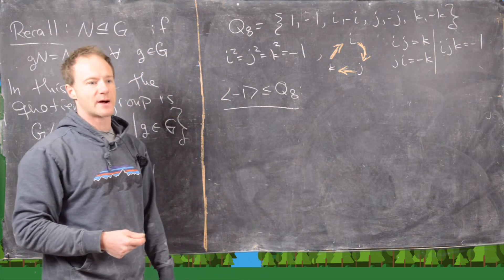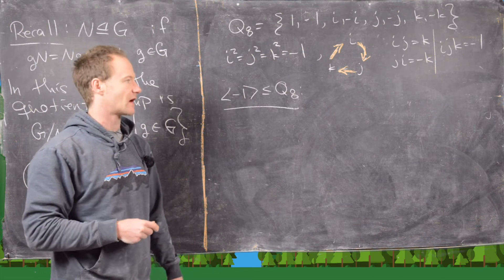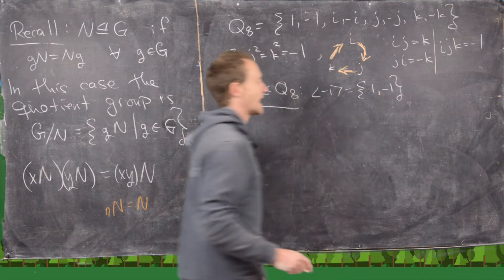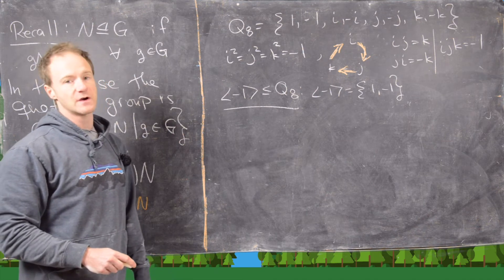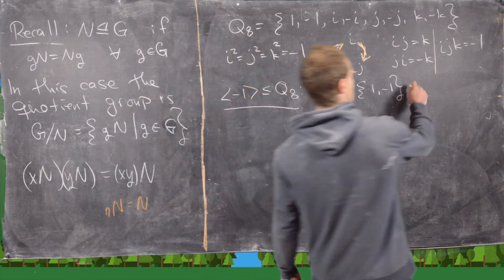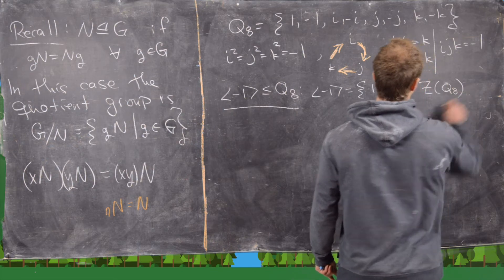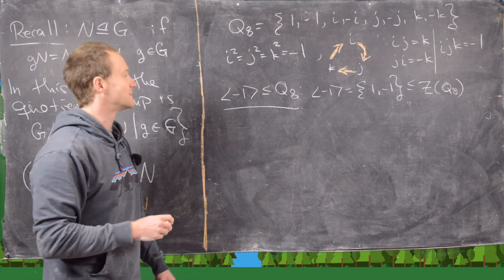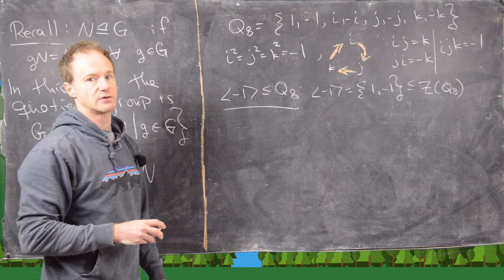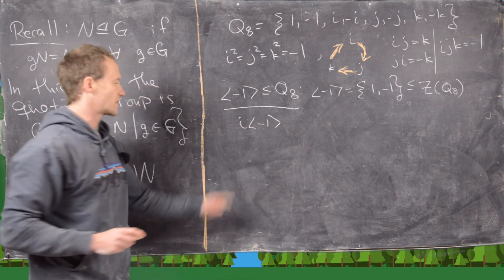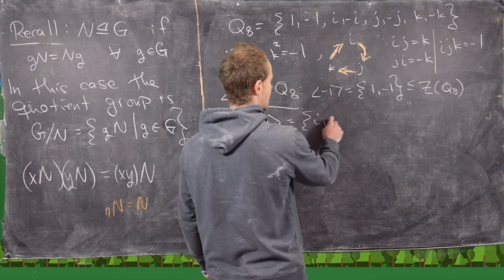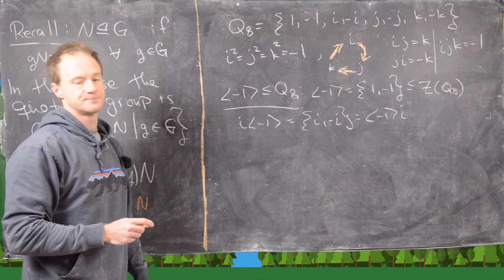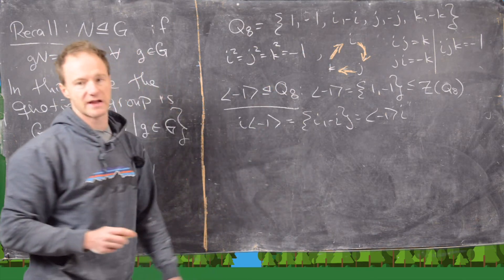Now let's look at the cyclic subgroup ⟨-1⟩ = {1, -1}. Both elements commute with everything in the group, so ⟨-1⟩ is a subgroup of the center of Q8 — in fact it is the center. Since everything commutes with it, all left cosets equal right cosets, so ⟨-1⟩ is a normal subgroup of Q8.